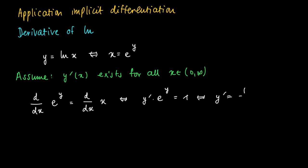So y prime equals 1 over e to the power y. Since we know that y equals ln of x, and we take e to the power y, then we know that e to the power y equals x.